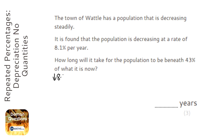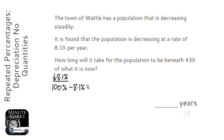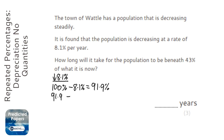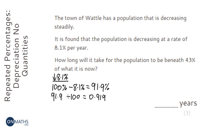It says it's decreasing by 8.1%, so let's work that out as a multiplier. We always start off with 100% and take away 8.1% because it's decreasing. The answer is 91.9%, and then we divide by 100 to get it as a multiplier: 0.919. Whenever we multiply something by this number, we're decreasing it by 8.1%.